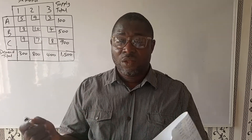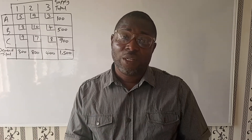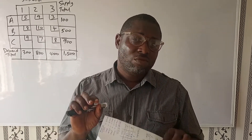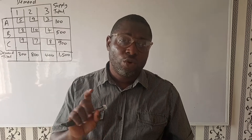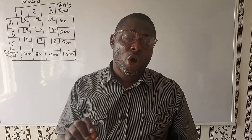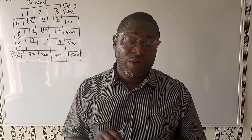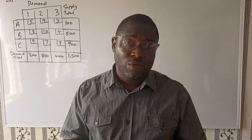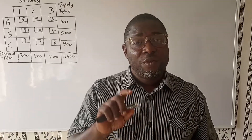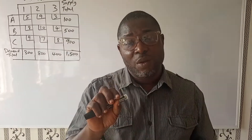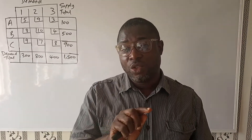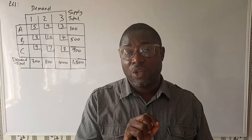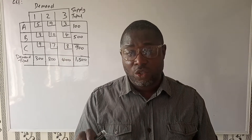Some texts will call this difference what we call penalties, but I prefer to keep it simple and just call it row difference or column difference. I'll demonstrate that on the board very soon. So when you find the difference between the least cost for each row and the least cost for each column —